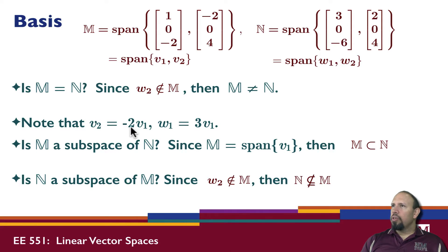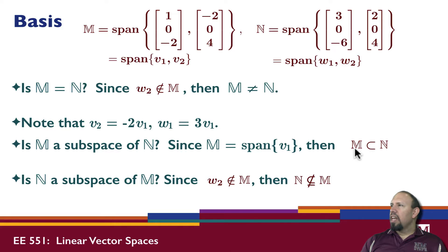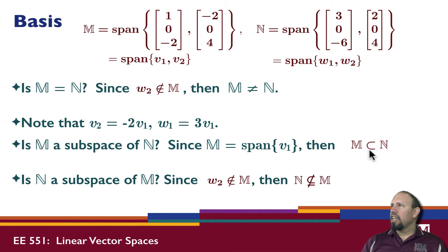V2 equals minus V1 and W1 equals 3 times V1. Since M equals the span of V1 and W1 is 3 times V1, the span of V1 equals the span of W1. So the span of N includes all elements in the span of V1, meaning M is contained in N — M is a subspace of N. However, since W2 is not in M, N cannot be contained in M.